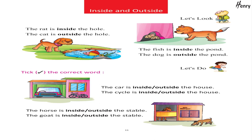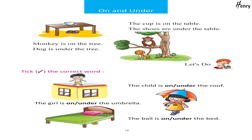Inside and Outside: The rat is inside the hole, the cat is outside the hole. The fish is inside the pond, the dog is outside the pond. Let's do — take the correct word. On and Under: The cup is on the table, the shoes are under the table, the monkey is on the tree, the dog is under the tree. Let's do — take the correct word.